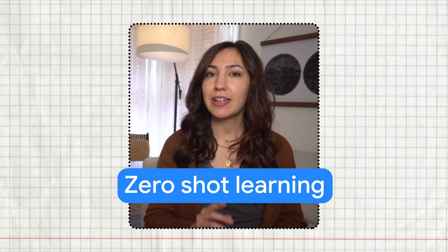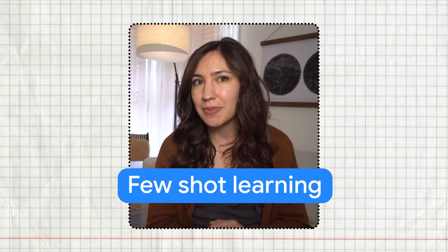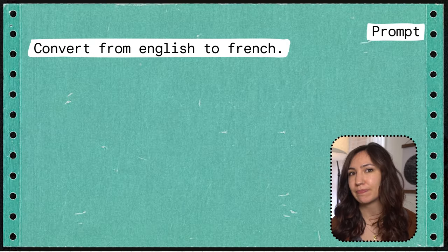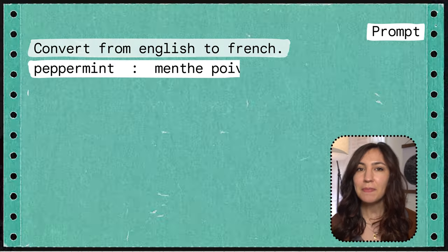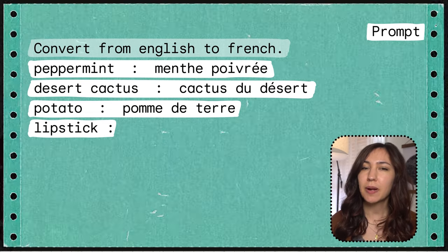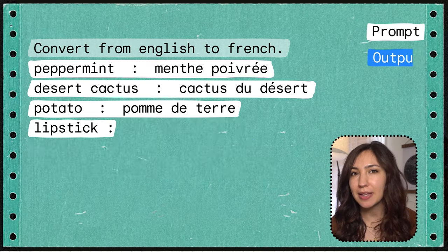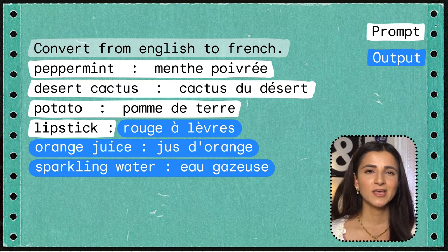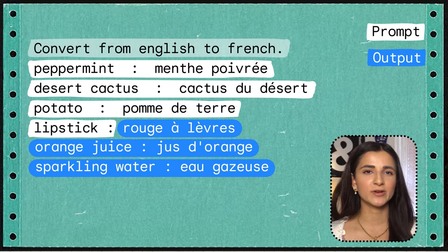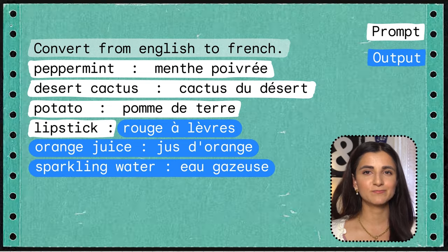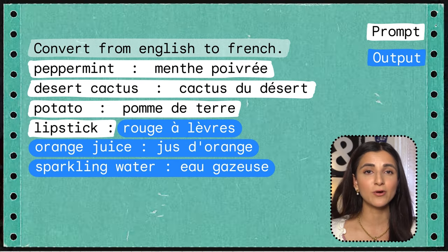But in addition to just providing an instruction, it can be helpful to show the model what you want by adding examples. This is called few-shot learning because we show the model a few examples. Here's a prompt for translating from English to French: first, we provide an instruction, then we give some examples establishing the text pattern. If we pass this prompt to an LLM like PaLM, the model does provide a French translation, but you might notice that it went on to generate additional English-French translation pairs — the LLM is just completing the pattern we gave it in the prompt.